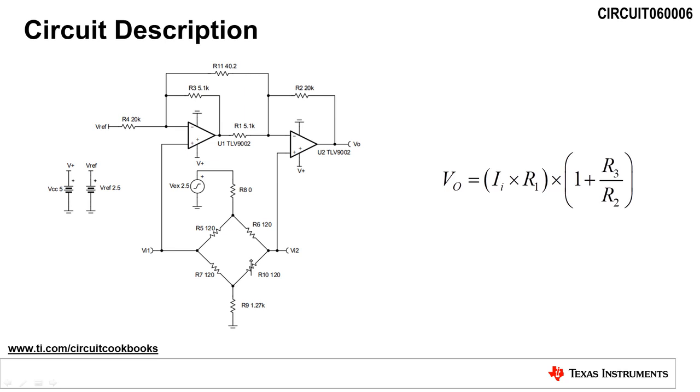Since an instrumentation amplifier's output voltage swing is dependent on the common mode voltage, resistors R8 and R9 are included in the circuit to shift the common mode voltage to produce the maximum output voltage swing. These resistors can also be used to limit the current through the bridge.